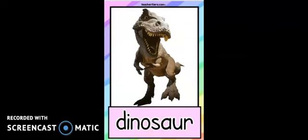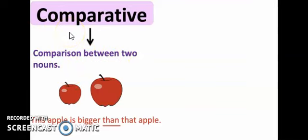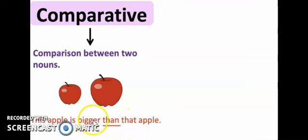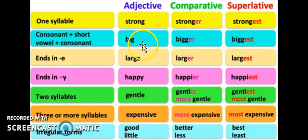Okay, we will proceed with comparative. This is what we have learned last week — comparison between two nouns. Comparative adjectives — membandingkan antara adjectives, kata sifat. For example, bigger. So this apple is bigger than that apple. Usually we will add -er. If it's one syllable, for example, strong becomes stronger, big becomes bigger, large becomes larger. You have to plus -er, kena tambah -er, for comparative.